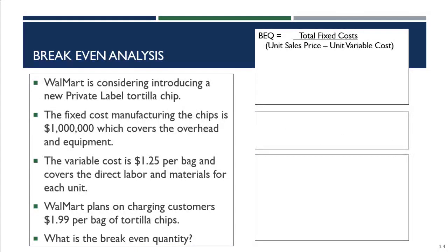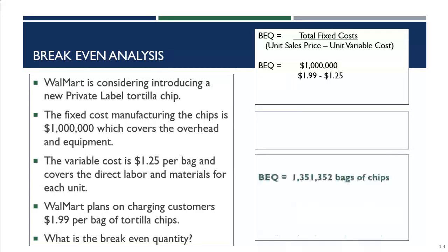So what's our break-even quantity for Walmart? Total fixed costs are $1,000,000, price is $1.99, and variable cost is $1.25. The equation is: $1,000,000 ÷ ($1.99 − $1.25). The break-even quantity Walmart needs to sell to make $0 in profit on this tortilla chip is 1,351,352 bags. We round up to the nearest whole number because you can't sell part of an item.